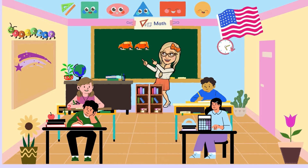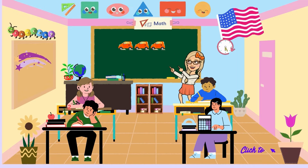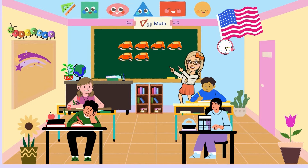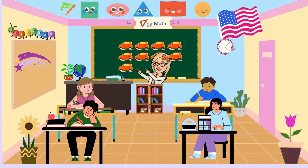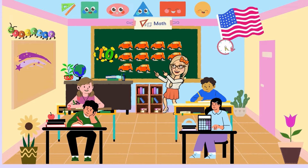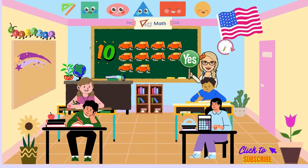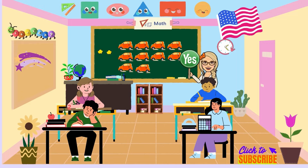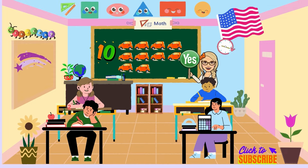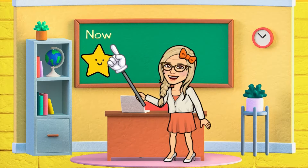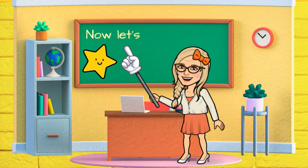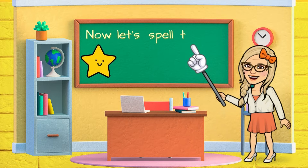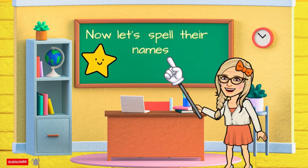One, two, three, four, five, six, seven, eight, nine, ten. We have finished counting! But now we're going to spell the name of the numbers, and of course you're going to spell the name of the numbers with me. There we go.